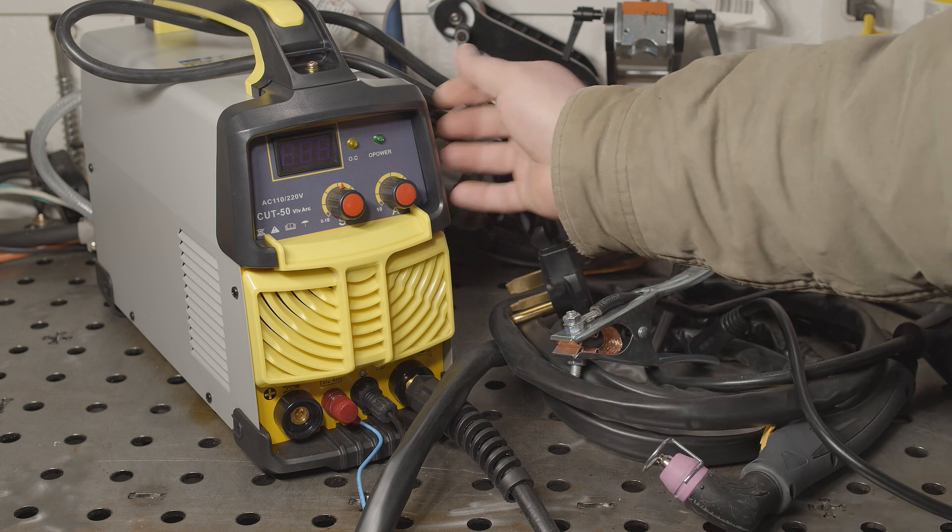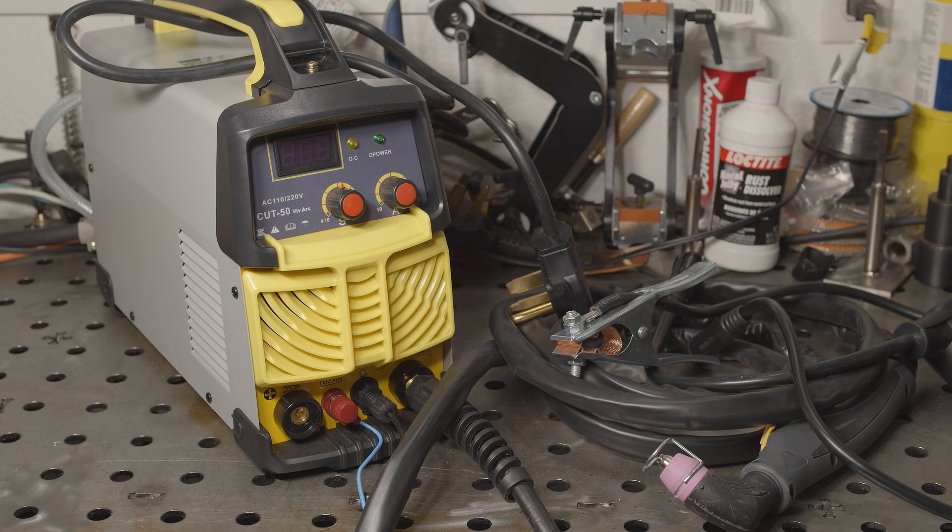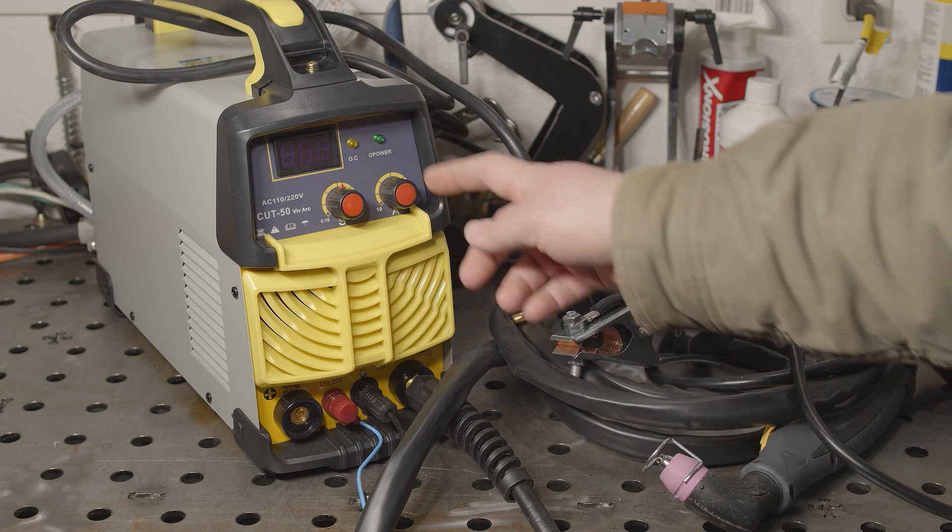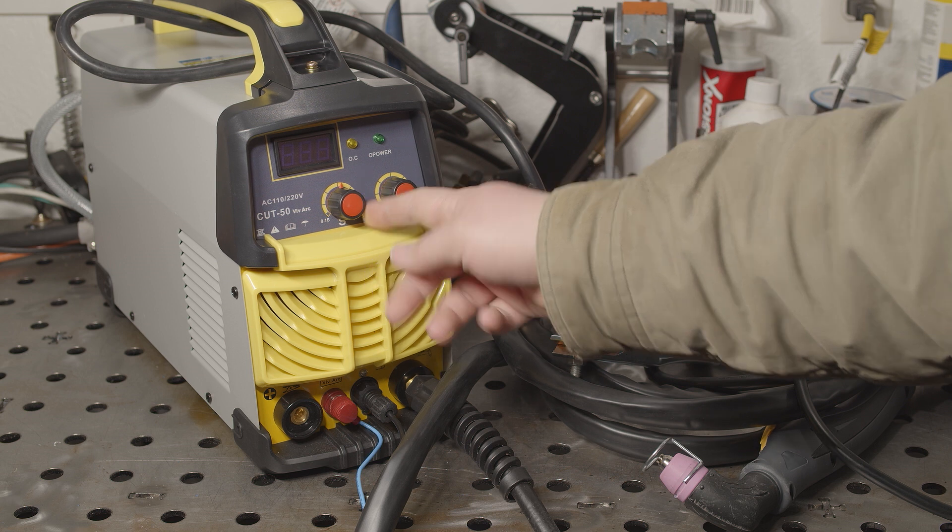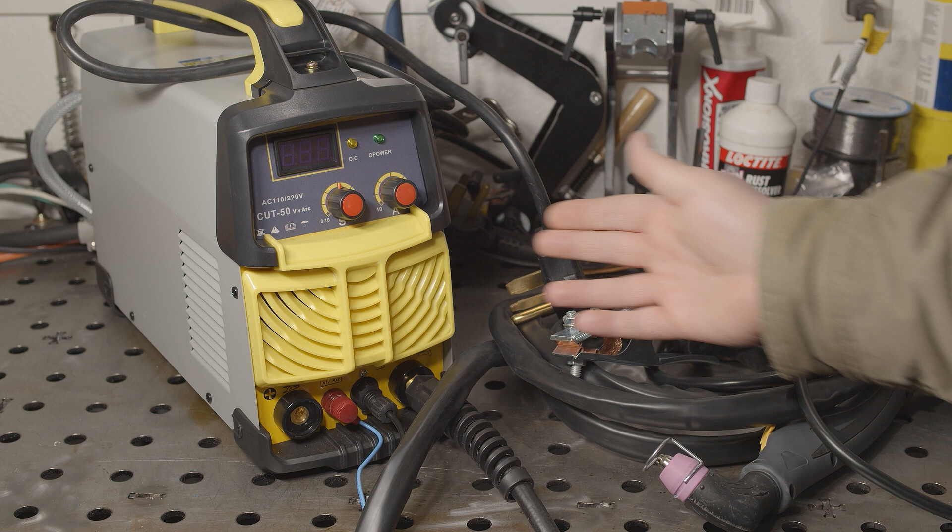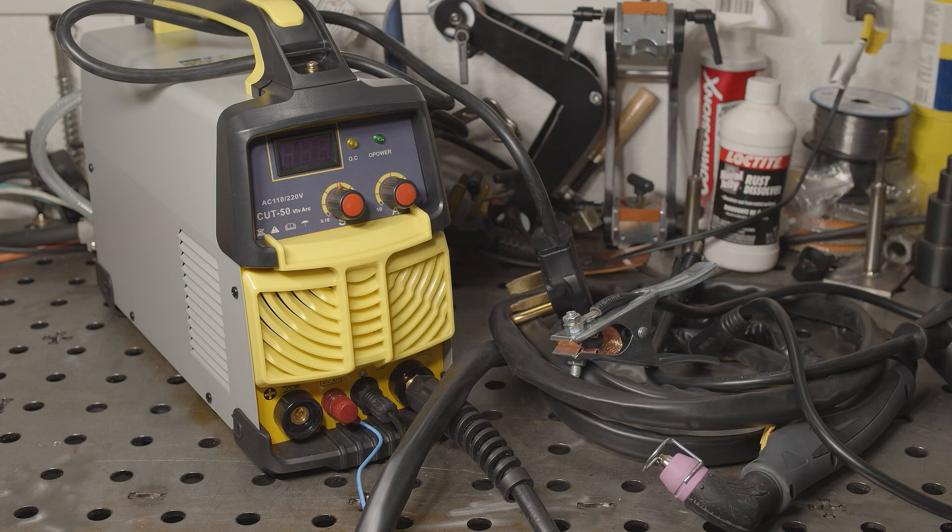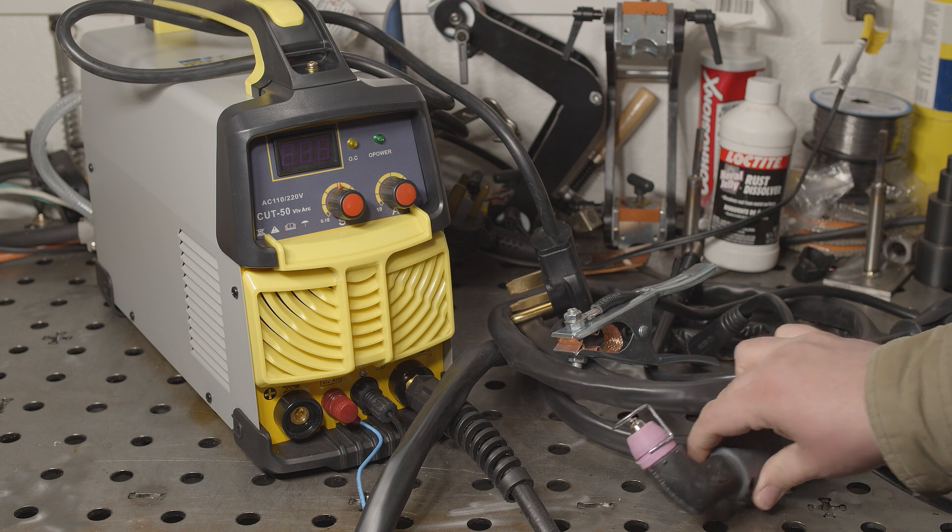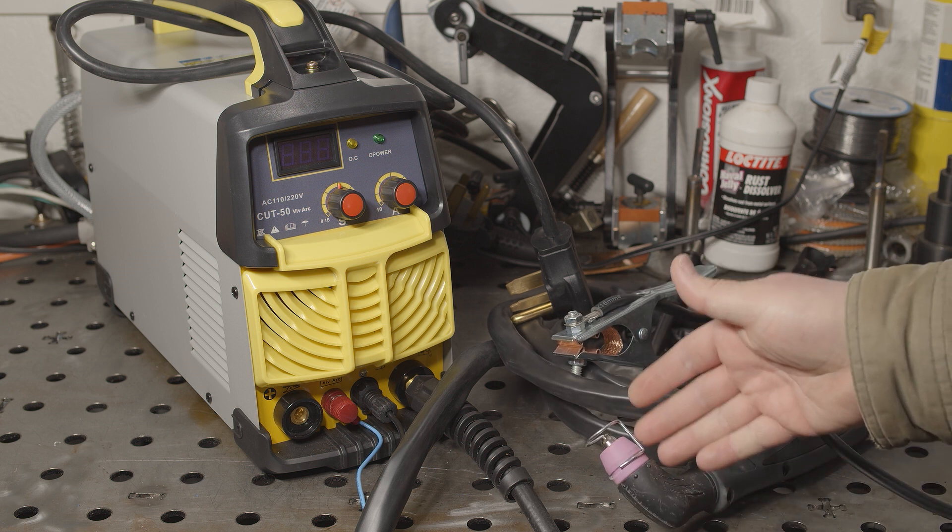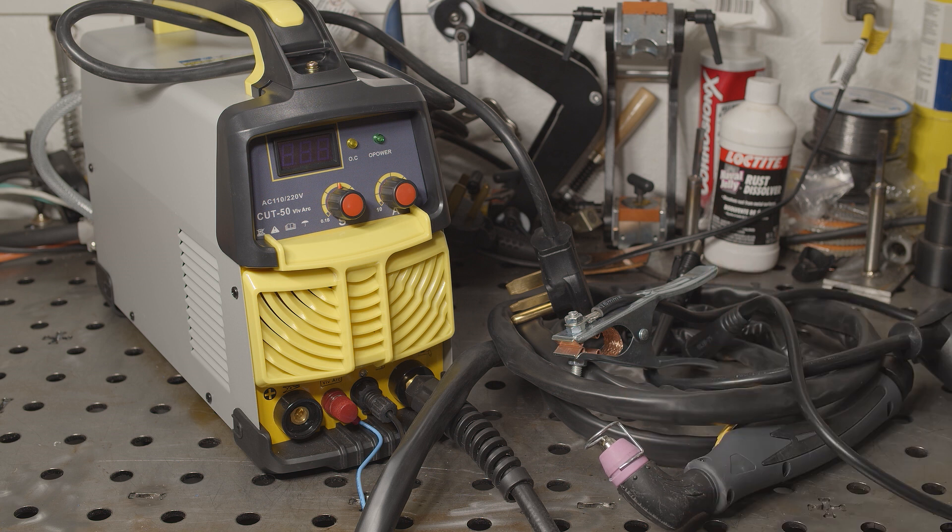The build quality, especially the feel of some of the plastics, is very cheap, but for the price, I can absolutely overlook that if it cuts well. In addition to the amperage knob, there is a second knob labeled S, and that is actually a post-flow setting. It says anywhere from 0.1 to 6 seconds, and it adjusts the amount of time that the compressed air will continue to flow after you stop cutting just to cool the torch down.